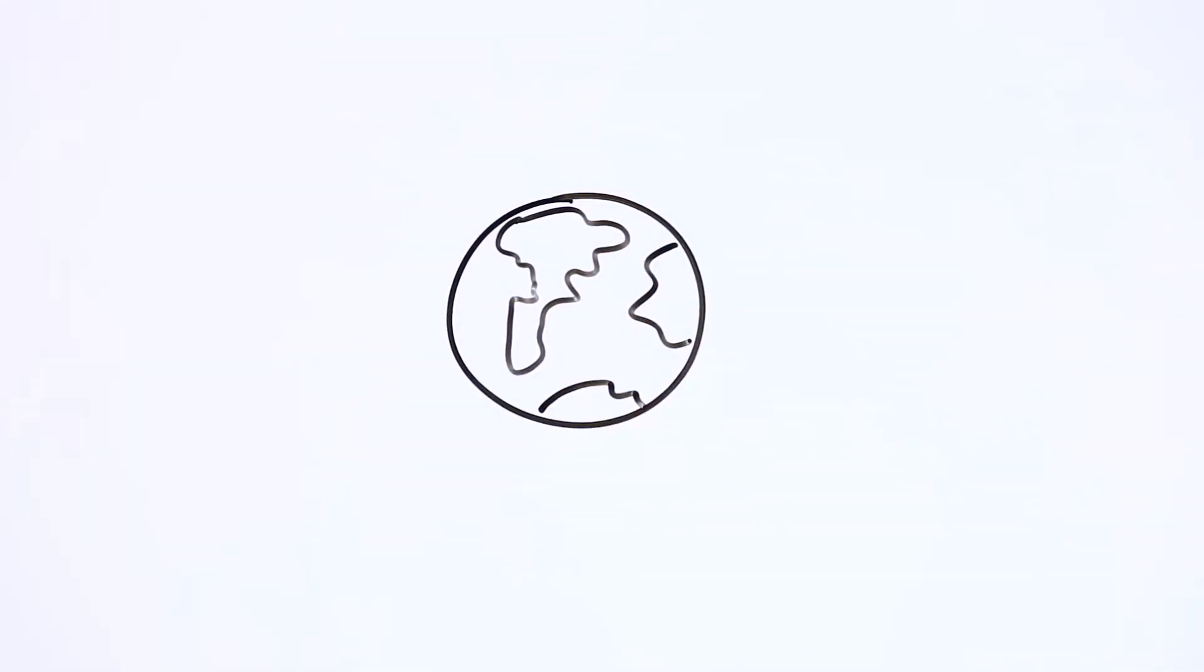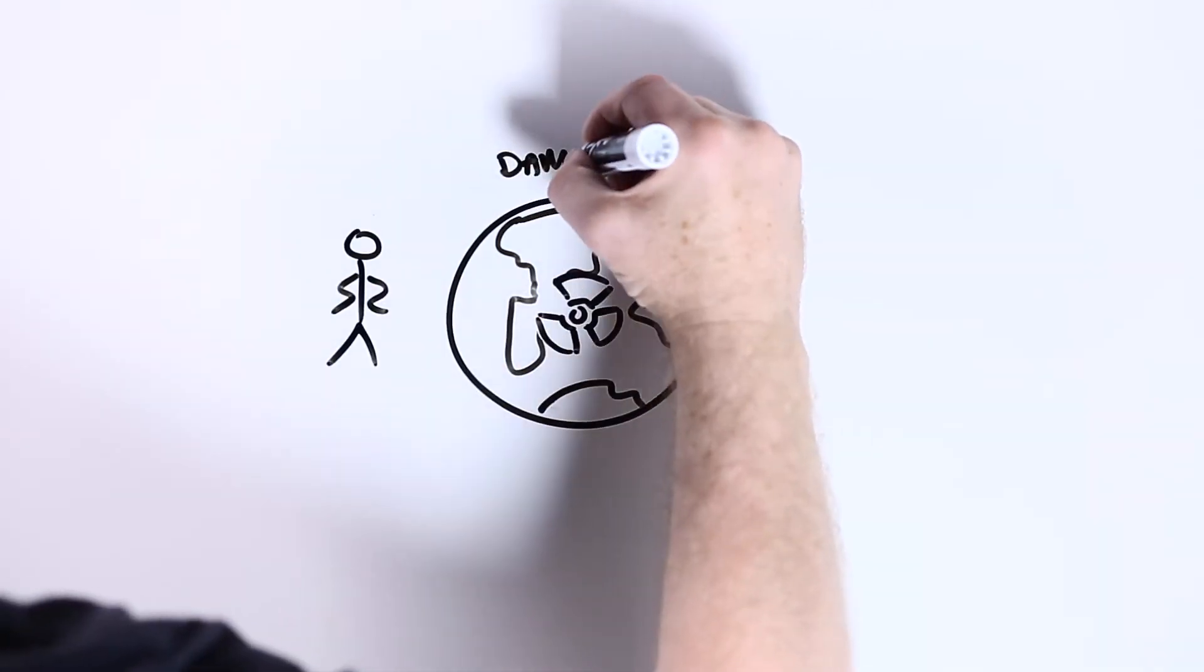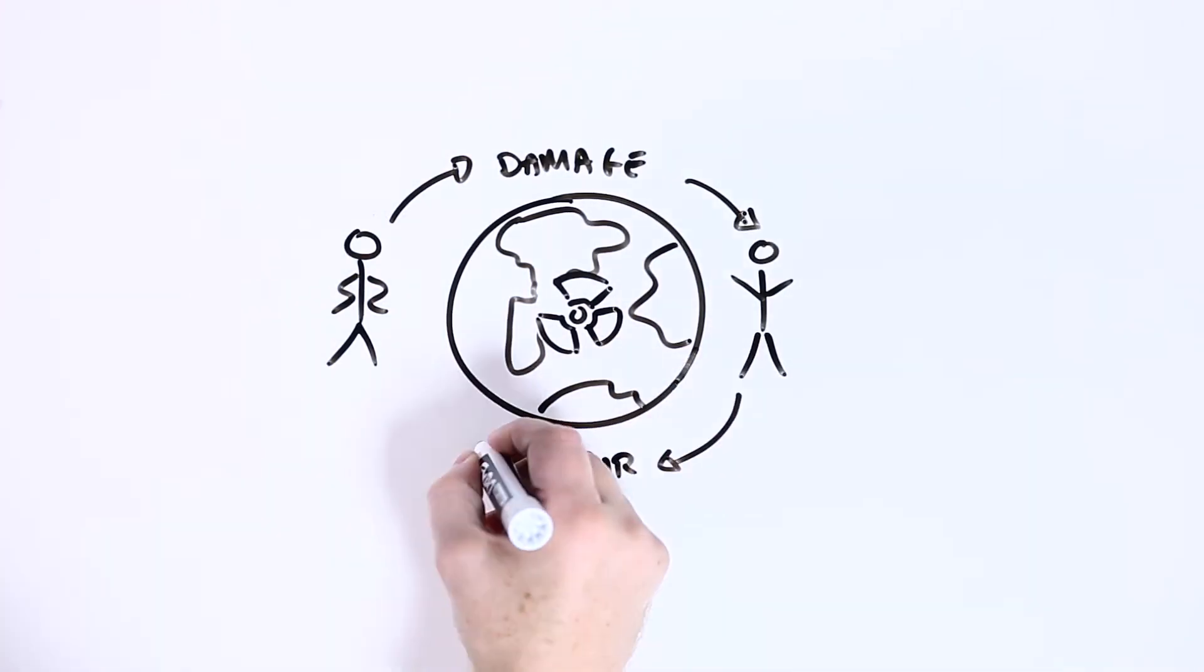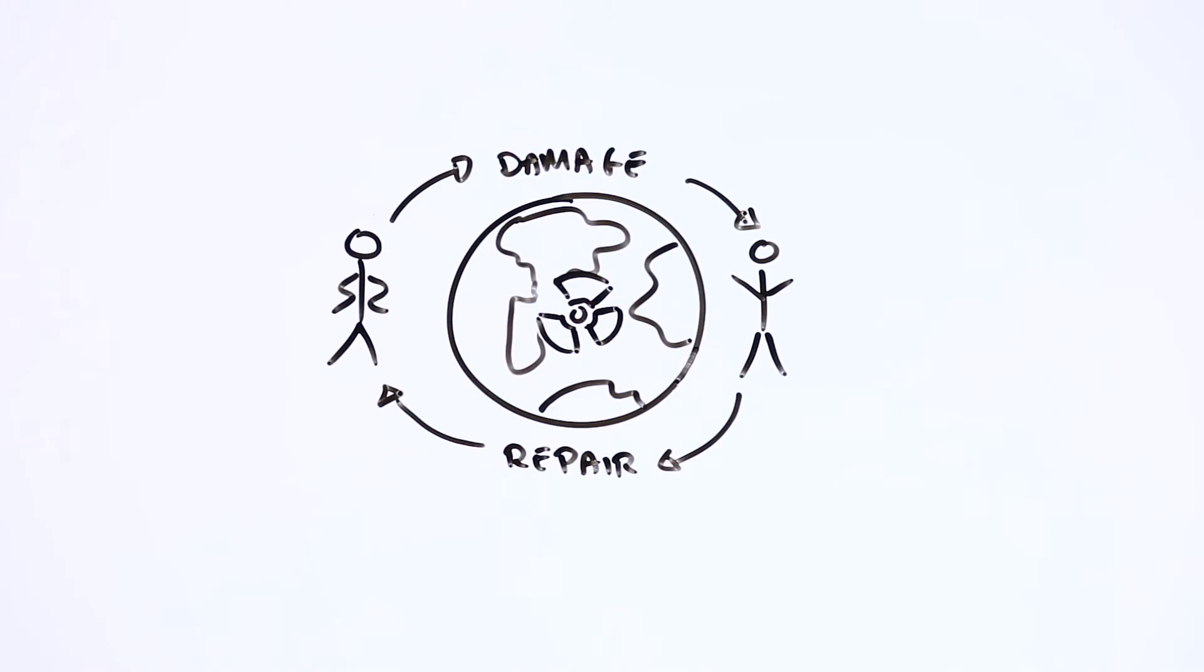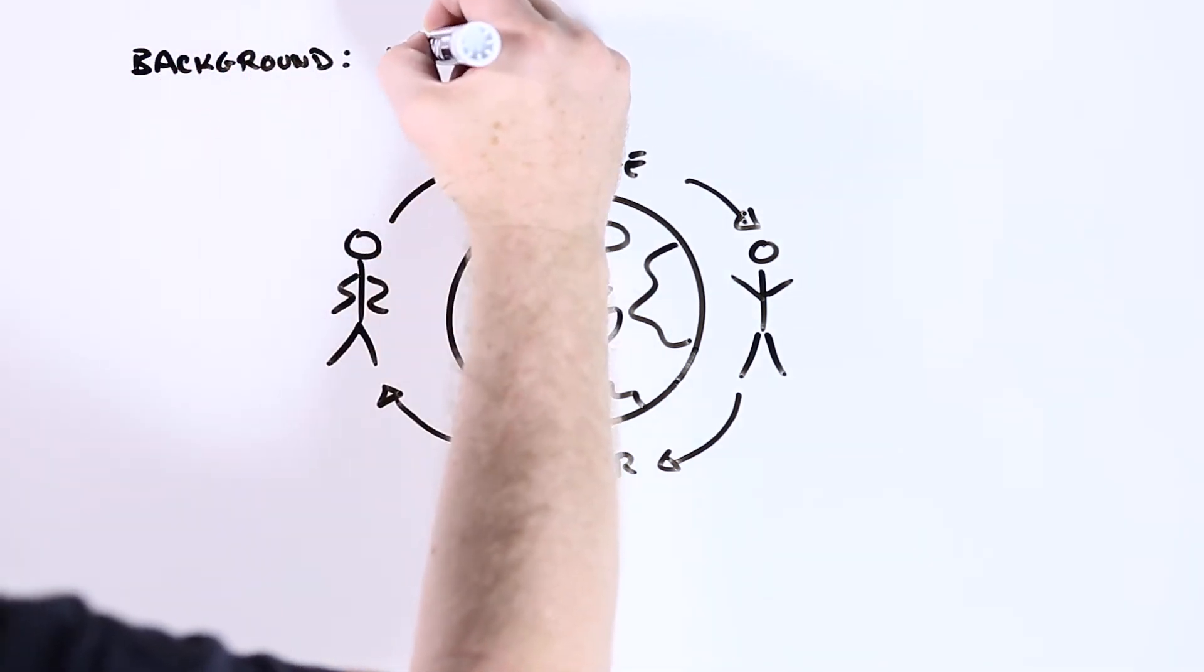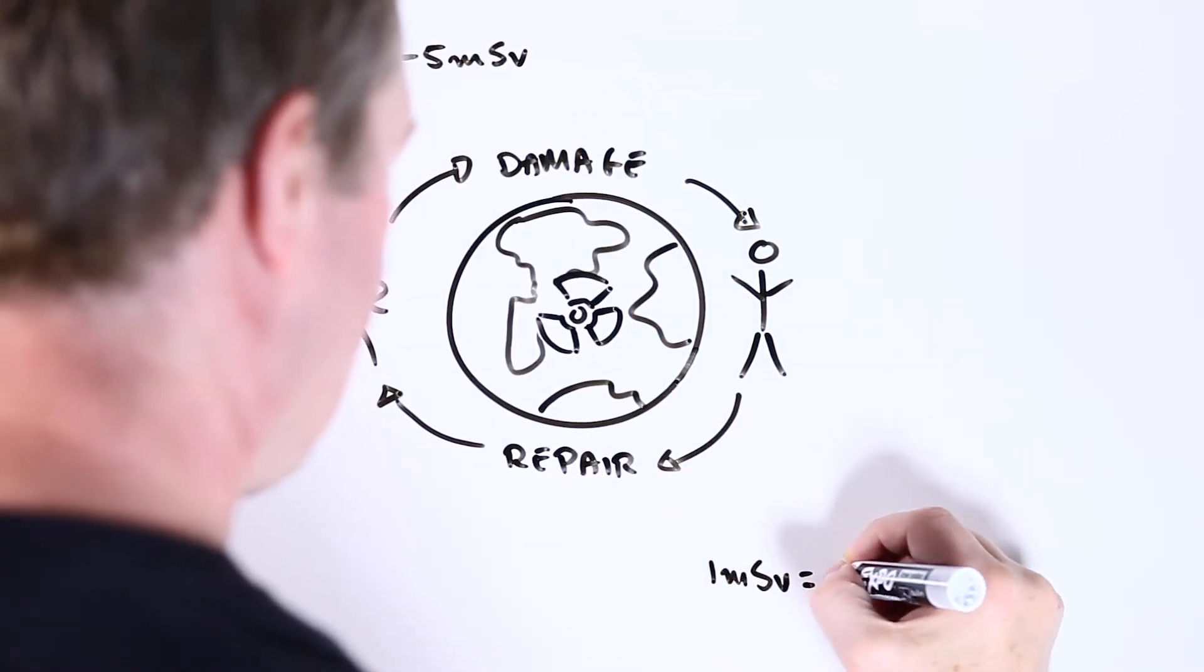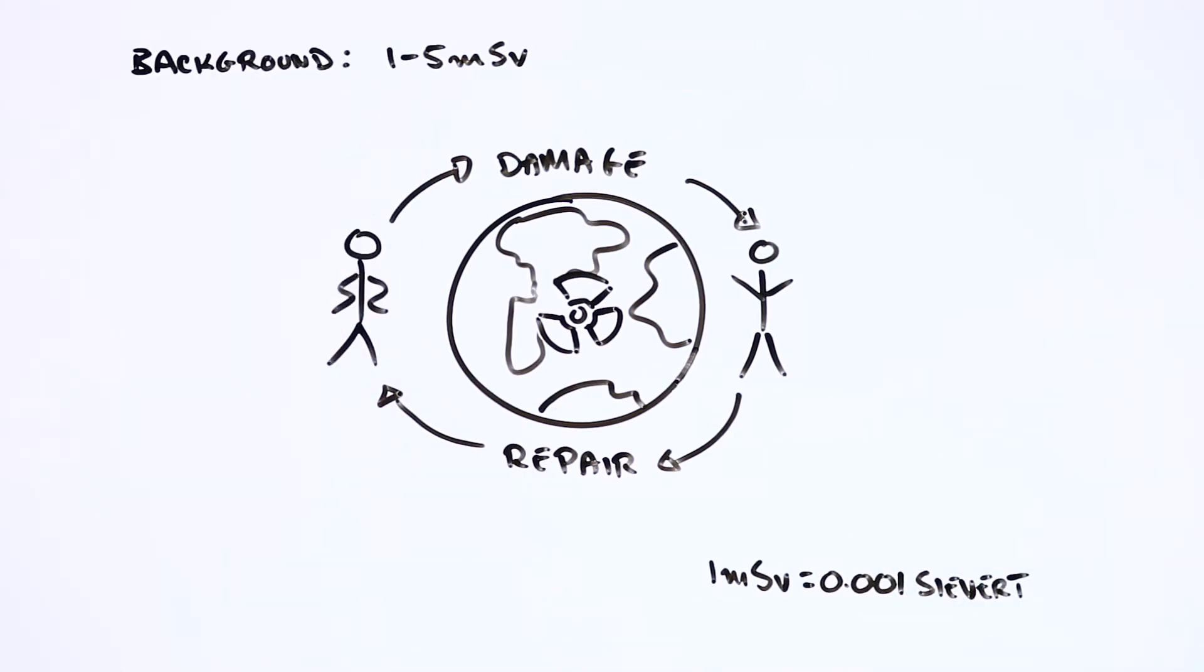On the other hand, because we live on a radioactive planet, we know that our bodies are pretty good at repairing the damage from low-level exposures. For instance, you're probably exposed to somewhere between one and five thousandths of a sievert every year from the Earth's natural background radiation.